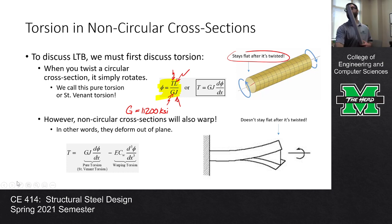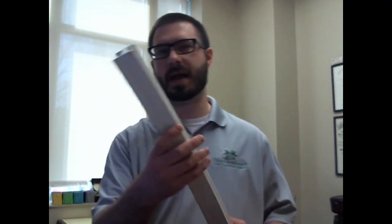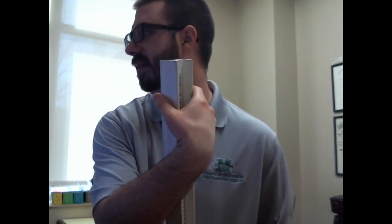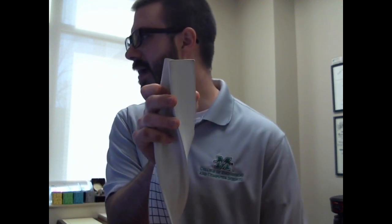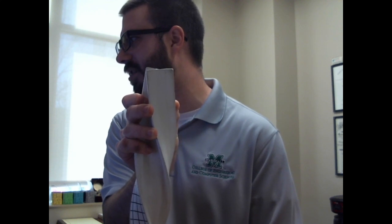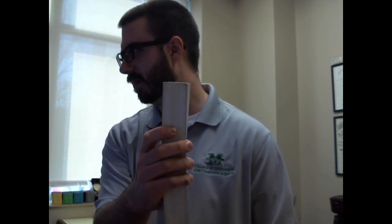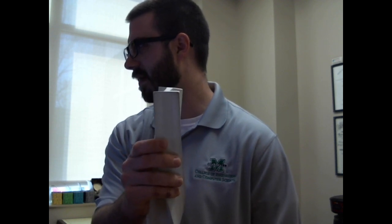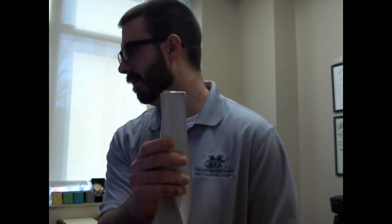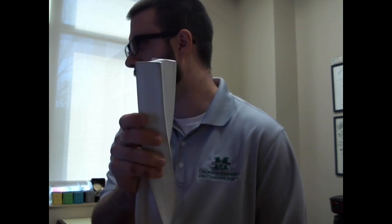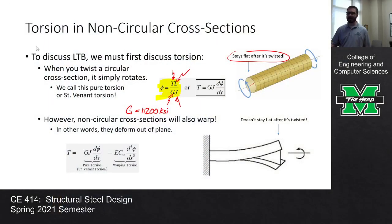I'm going to demonstrate on the screen with my I-beam model. I hold it flat and twist it — you can see the flanges going in and out of the cross section, kind of warping. One flange goes one way, the other goes the other way. That response is called warping.